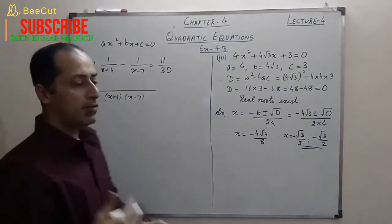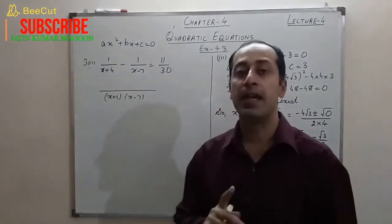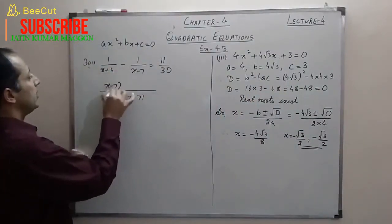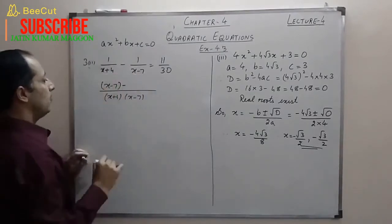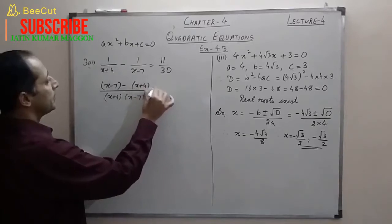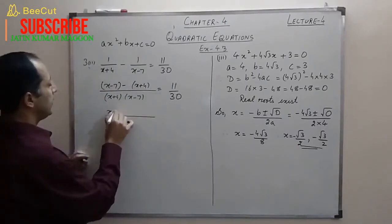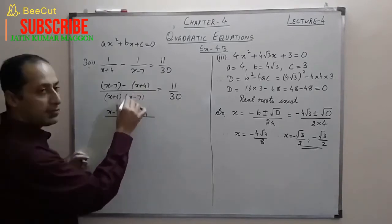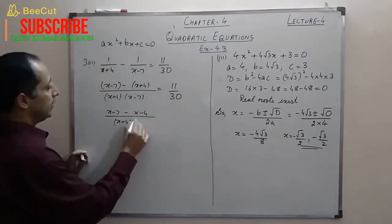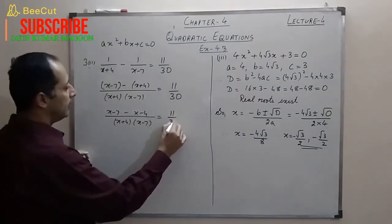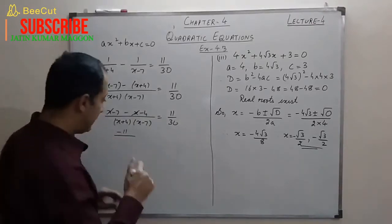The LCM is (x+4)(x−7). Dividing the LCM by each denominator and writing in brackets: the numerator becomes (x−7) − (x+4). Make sure to use brackets because of the negative sign — the signs of both terms in (x+4) will change. So numerator becomes x−7−x−4 = −11, over the denominator (x+4)(x−7), equals 11/30.